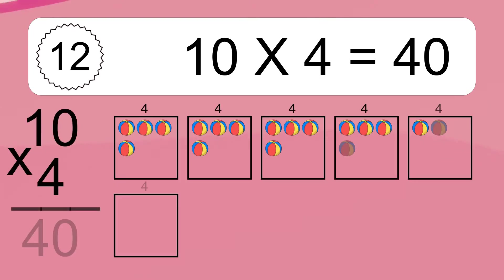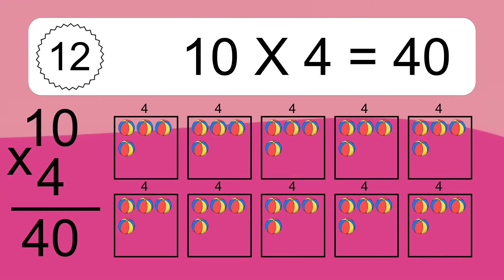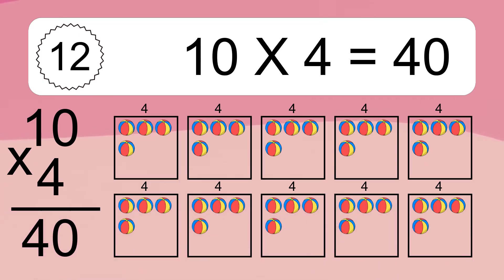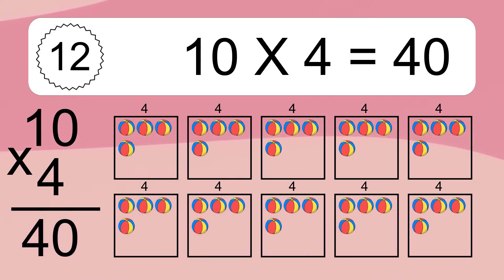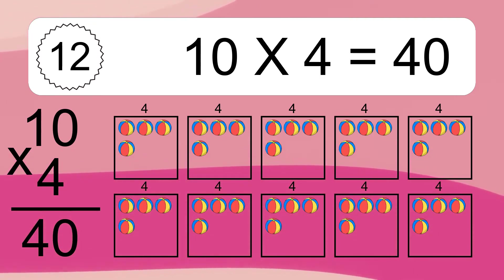10 times 4 equals what? 10 times 4 equals 40. We have 10 boxes and each box has 4 colorful balls inside. If you count all the balls in all the boxes together, you will have 10 times 4 balls. This equals 40 balls.